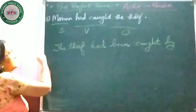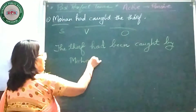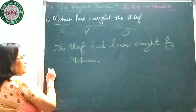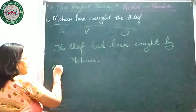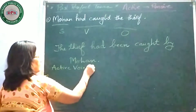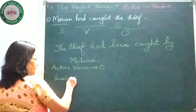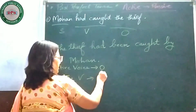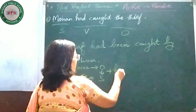By whom? By Mohan. 'The thief had been caught by Mohan.' Now see the formula: the object of active voice will become the subject of passive voice.